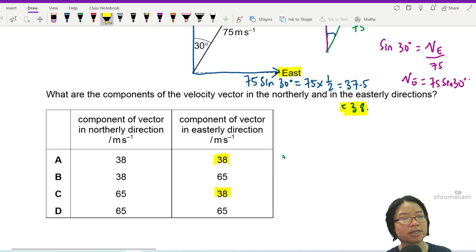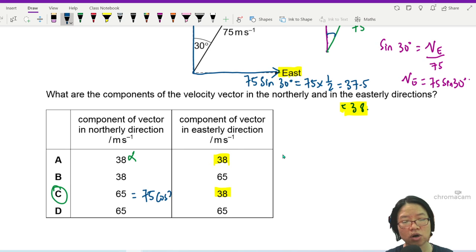But the other one cannot be 38 because this angle is not 45 degrees. So this is wrong. The answer is C. Or you could press your calculator and check - this one should be 75 cos 30. So that's it for question 3. It's a pretty straightforward one.